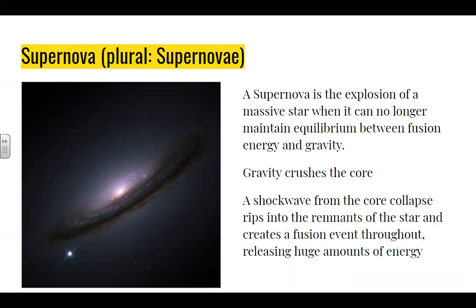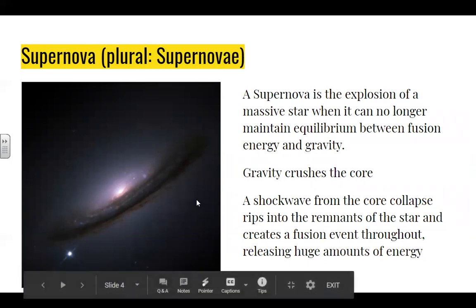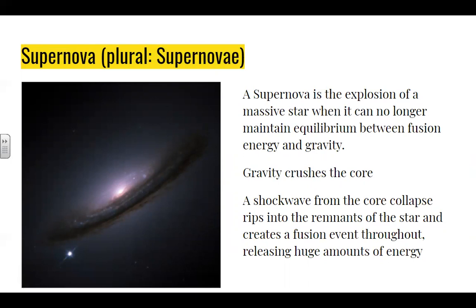Generally, stars make energy in their very center core — actually a pretty small area of the star — and the fusion energy is enough to push out and keep the star in equilibrium. Very massive stars have enough energy to start fusing heavier and heavier elements. Our sun fuses hydrogen into helium, and a little bit of helium into lithium and beryllium. Hydrogen is atomic number one — just a single proton. Hydrogen finds another hydrogen and fuses to make atomic number two, helium. Helium finds another helium and they fuse to become beryllium. Or a helium finds a hydrogen and becomes lithium. That's what happens in our star.